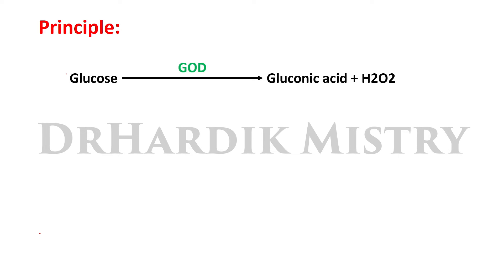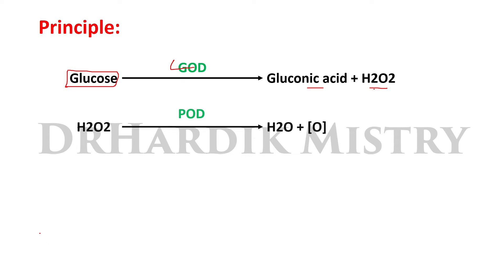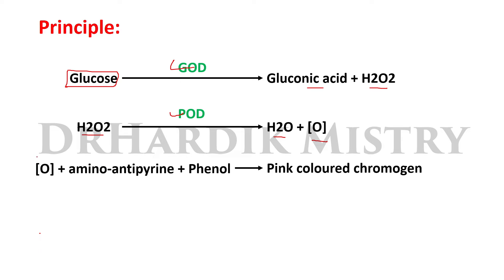The principle of this method uses two enzymes: first, glucose oxidase, and second, peroxidase. The glucose oxidase enzyme converts D-glucose present in the plasma to gluconic acid and hydrogen peroxide (H2O2). The peroxidase enzyme then converts H2O2 into water (H2O) and nascent oxygen.